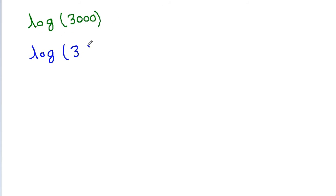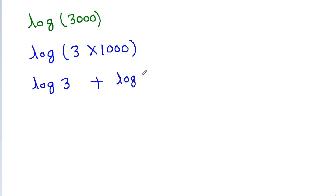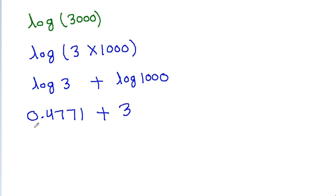If you have to find the value of log 3000, you can write it as log 3 plus log 1000. Log 3 is 0.4771 and log 1000 is log 10 cubed, which equals 3. So log 3000 = 3.4771.